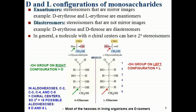In D-glucose, the functional group is the aldehyde at carbon one. Counting from the aldehyde, carbon number five — right above CH₂OH — is the farthest chiral carbon. Because its OH is on the right-hand side, this is D-glucose. To write the L configuration, the entire molecule is mirrored: every OH on the right becomes left, and every OH on the left becomes right — the whole image is flipped, not just the farthest carbon.